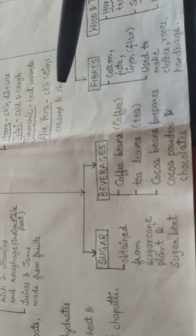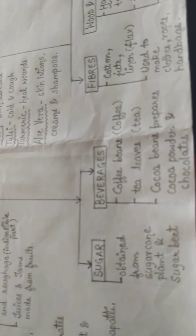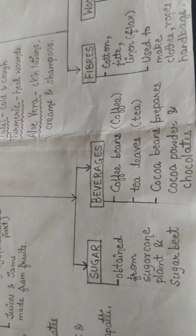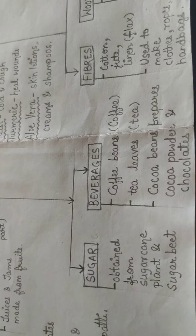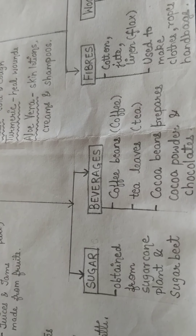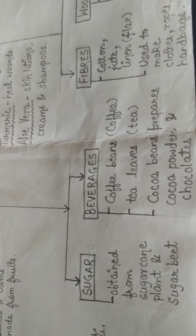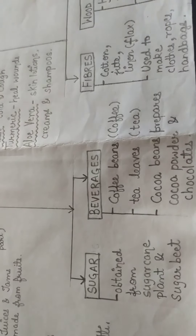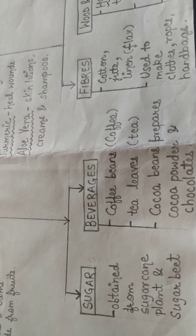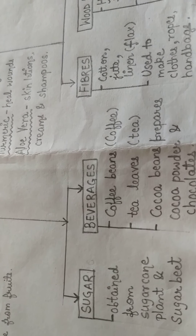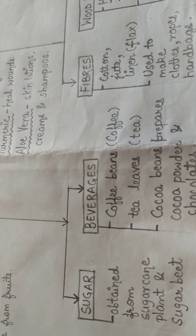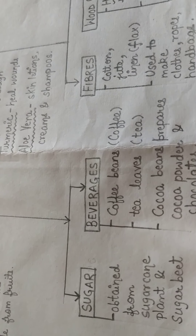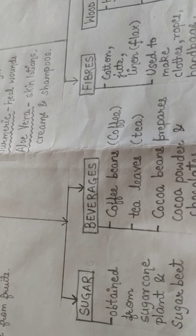Then comes beverages, which basically means drinks. Coffee and tea come under beverages and are obtained from plants. We get coffee from coffee beans and tea from tea leaves. Cocoa beans are used to prepare cocoa powder and chocolates. So beverages like coffee and tea are also obtained from plants.